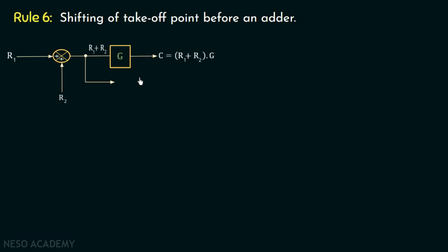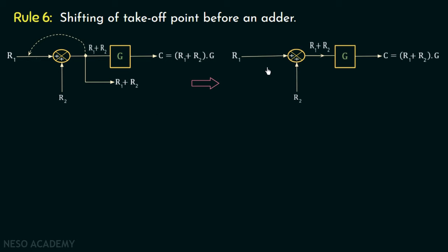We are interested in the output of this takeoff point. The output of this takeoff point is r1 plus r2. Now if we want to shift this takeoff point before this adder, let us try to shift it without any change and see what happens with the output. Consider this block diagram representation in which everything is the same but we have shifted this takeoff point before the adder. Now what is the output of this takeoff point?